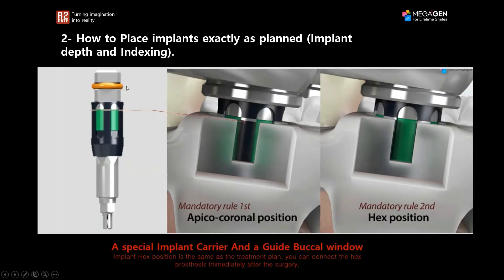When you're placing your implant through the surgical guide, we have two rules that you need to apply. Rule number one: during placing the implant through the surgical guide, I need to make sure that this horizontal silver marking coincides with the top of the surgical guide — it means that this implant has been placed to the correct depth. On the other hand, if the green markings in the carrier show through the built-in window in the surgical guide, it means that this is also the flat side of the hex. So with R2GATE I can place the implant to the correct depth that I planned for, and also with the correct hex position as well.